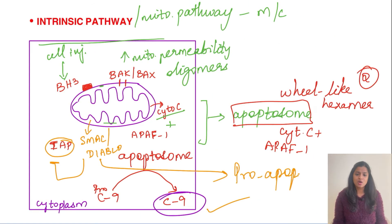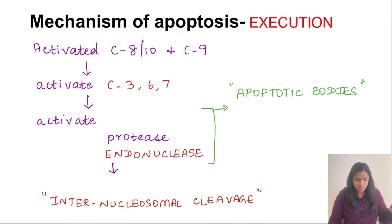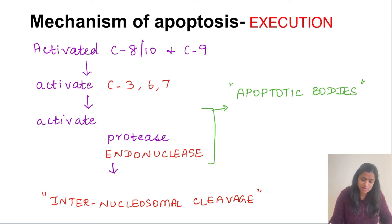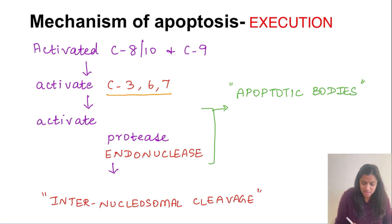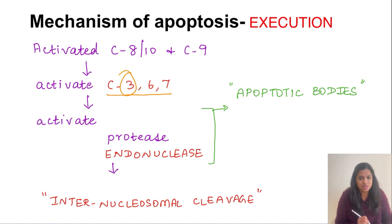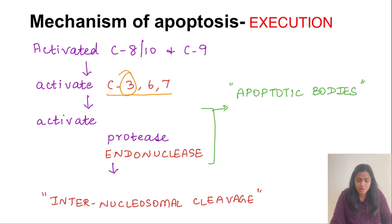So to recap: in the extrinsic pathway, pro-caspase 8 and 10 are converted to active caspase 8 and 10; in the intrinsic pathway, active caspase 9 is formed. The initiation phase is now complete. These initiator caspases — 8, 9, and 10 — then activate the execution phase, which is carried out by caspases 3, 6, and 7, with caspase 3 being the most important.